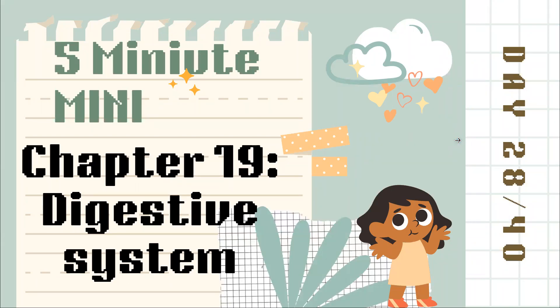Good morning, happy Friday, and welcome to day 28 of 40, your little five-minute mini. We're going to be talking about chapter 19, the digestive system today. This is the only day that we have on the digestive system, but you have through the weekend to complete your assignments. They're due Sunday at 11:55 p.m. in the evening.